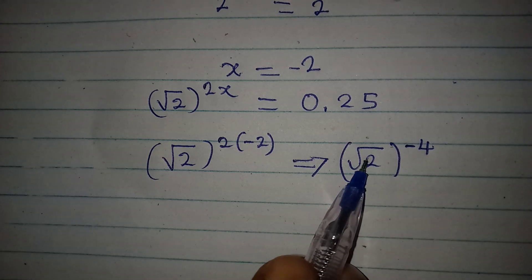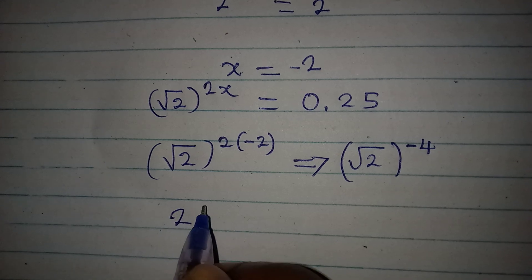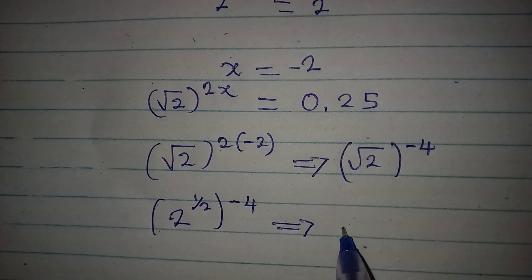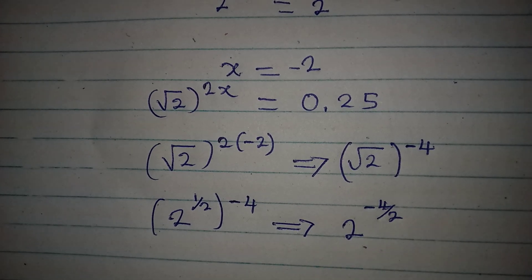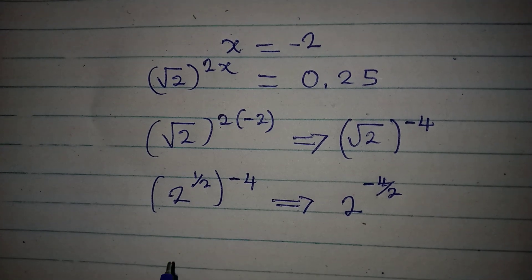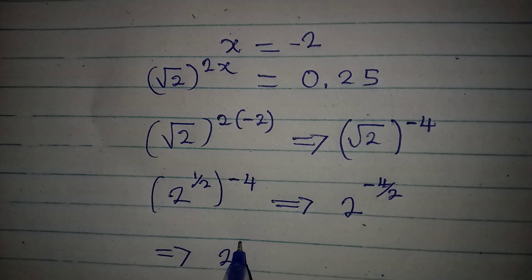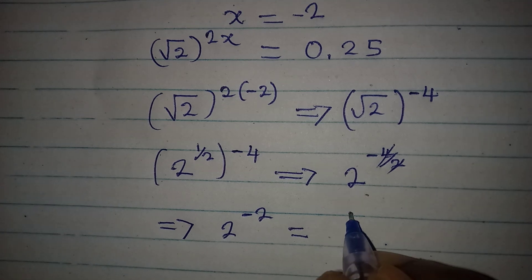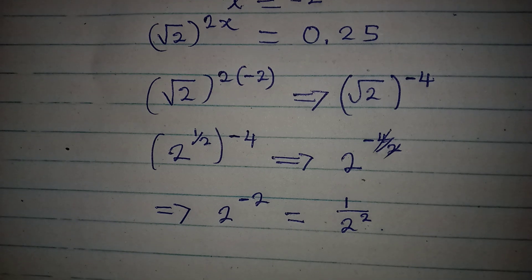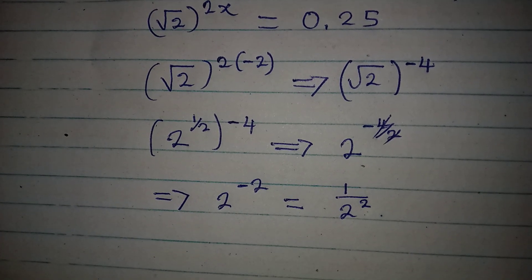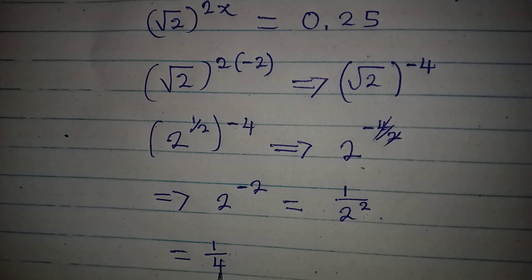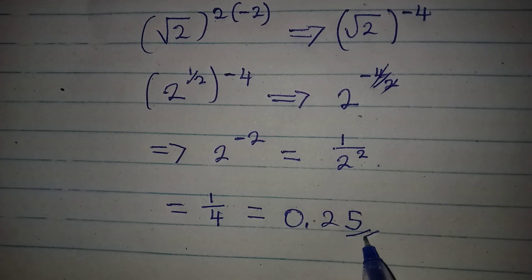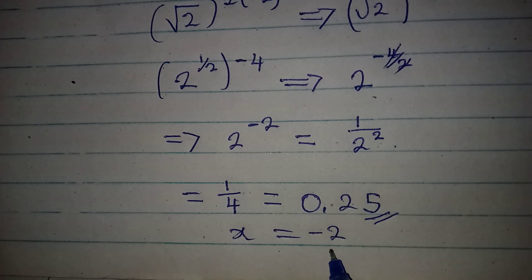Square root of 2 is the same as 2 to the power of 1 over 2, and we have minus 4 on the outside. Opening the bracket gives us 2 to the power of negative 4 over 2, which simplifies to 2 to the power of negative 2, since 2 goes into 4 twice. This is the same as 1 over 2 squared, which equals 1 over 4. And 1 over 4 is equal to 0.25, confirming that x equals minus 2 is correct.